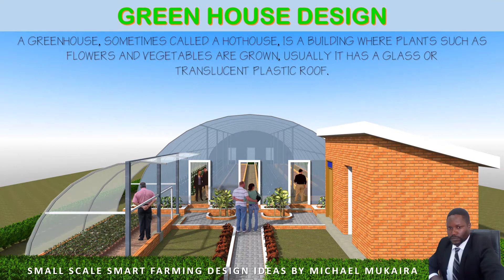A greenhouse can sometimes be called a hothouse, and it's generally a building where plants such as flowers and vegetables are usually grown. Most of the time these kinds of structures are covered by glass or fiber and translucent plastic roofs.